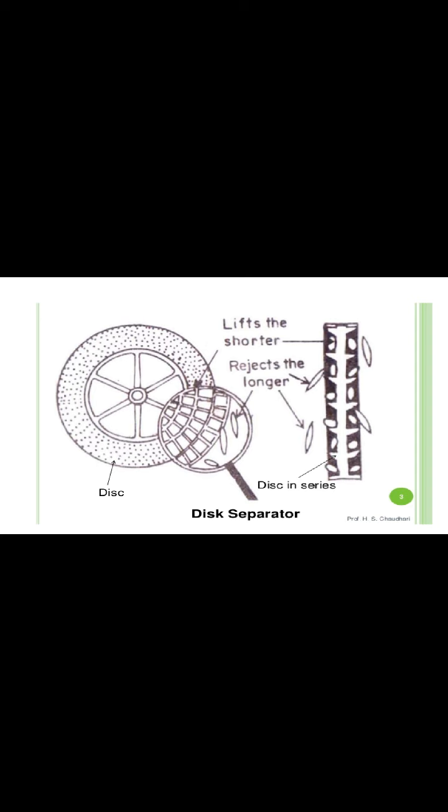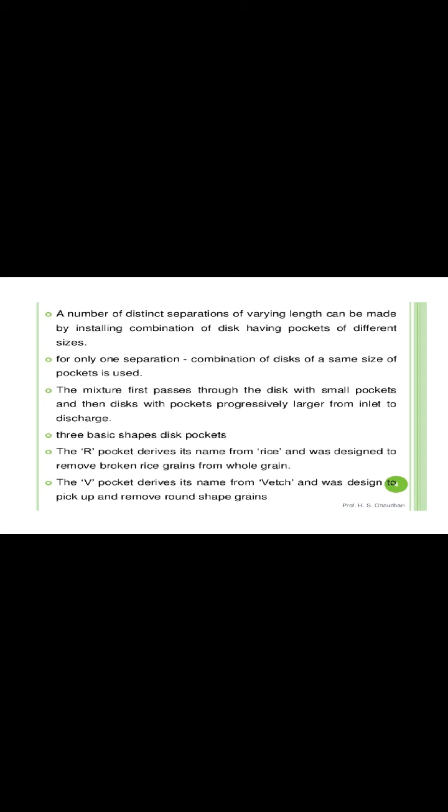This is the disc separator — the discs lift the shorter material while the larger material is rejected. A number of distinct separations of varying discs can be made by using a combination of discs having pockets of different sizes. For only one separation, a combination of discs of the same pocket size is used. The mixture first passes through discs with small pockets and then discs with pockets progressively larger from inlet to discharge.